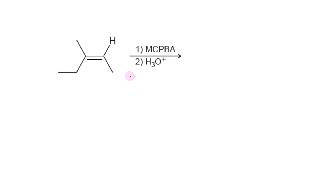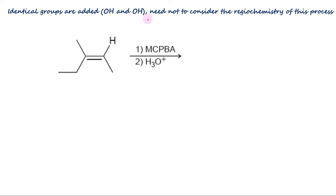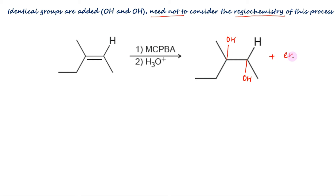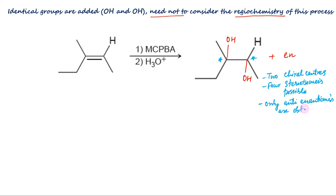Let us try to write the products of these epoxidation reactions. The reagent MCPBA denotes meta-chloroperoxybenzoic acid, which brings epoxidation across the alkene double bond. This is followed by acid-catalyzed ring opening. In the end, these reagents achieve dihydroxylation, meaning OH and OH will add across the alkene. Since the two groups are identical, we don't need to consider the regiochemistry. However, the stereochemistry must be considered. Begin by determining the number of chirality centers formed. In this case, two new chirality centers are formed, so out of four possible enantiomers, we expect only the pair of enantiomers that result from anti-addition.